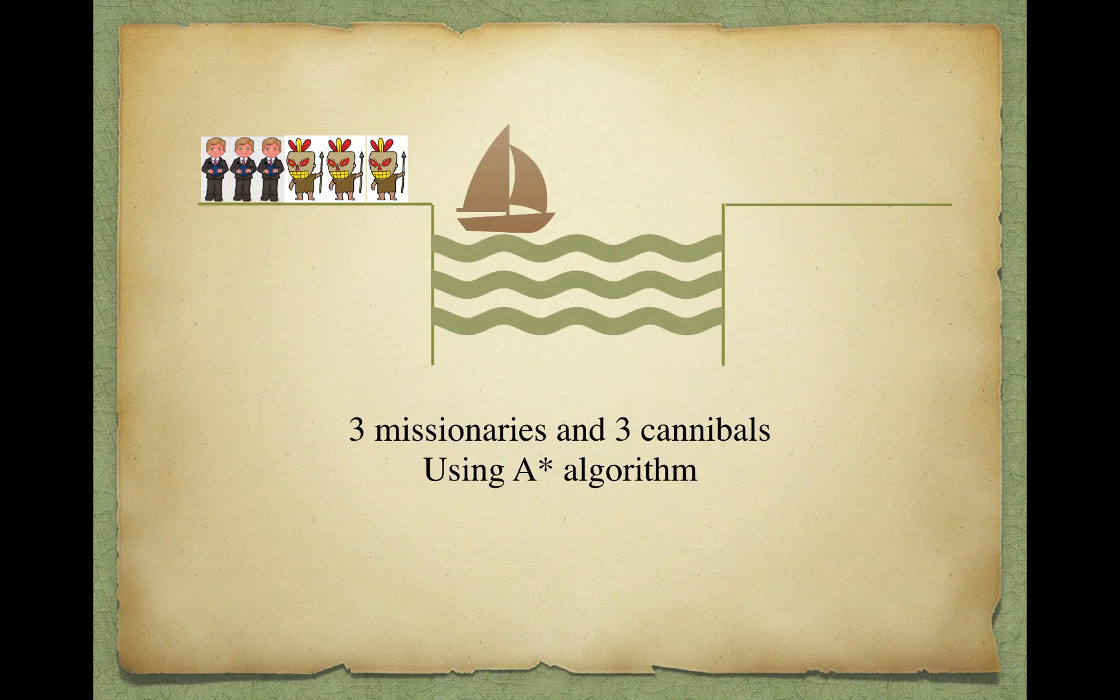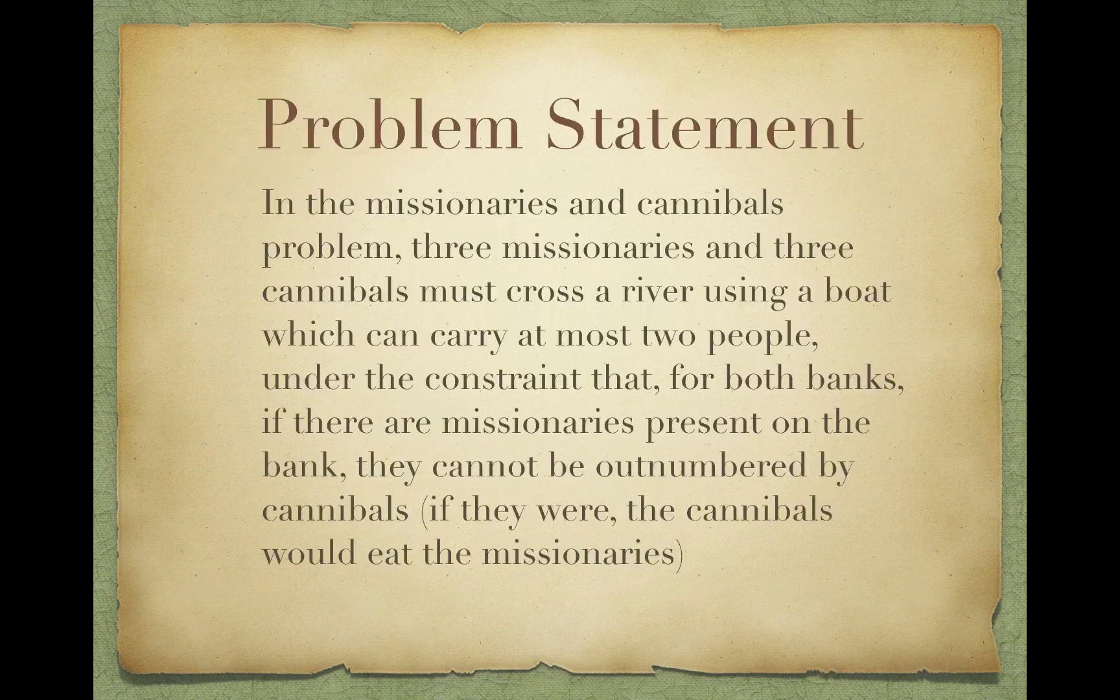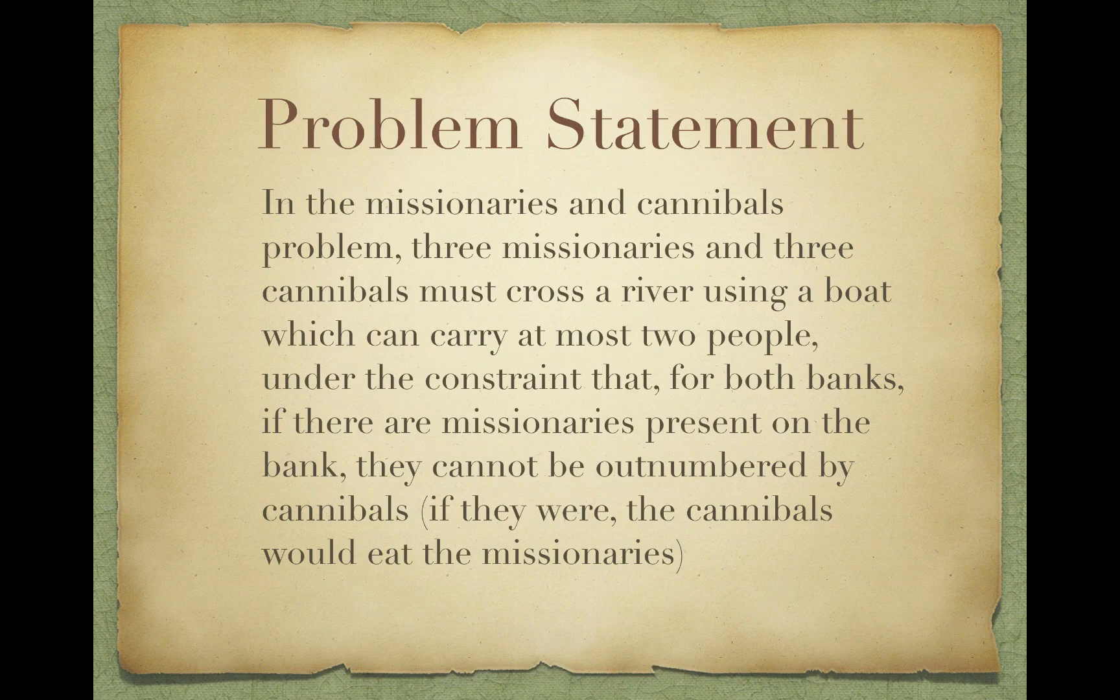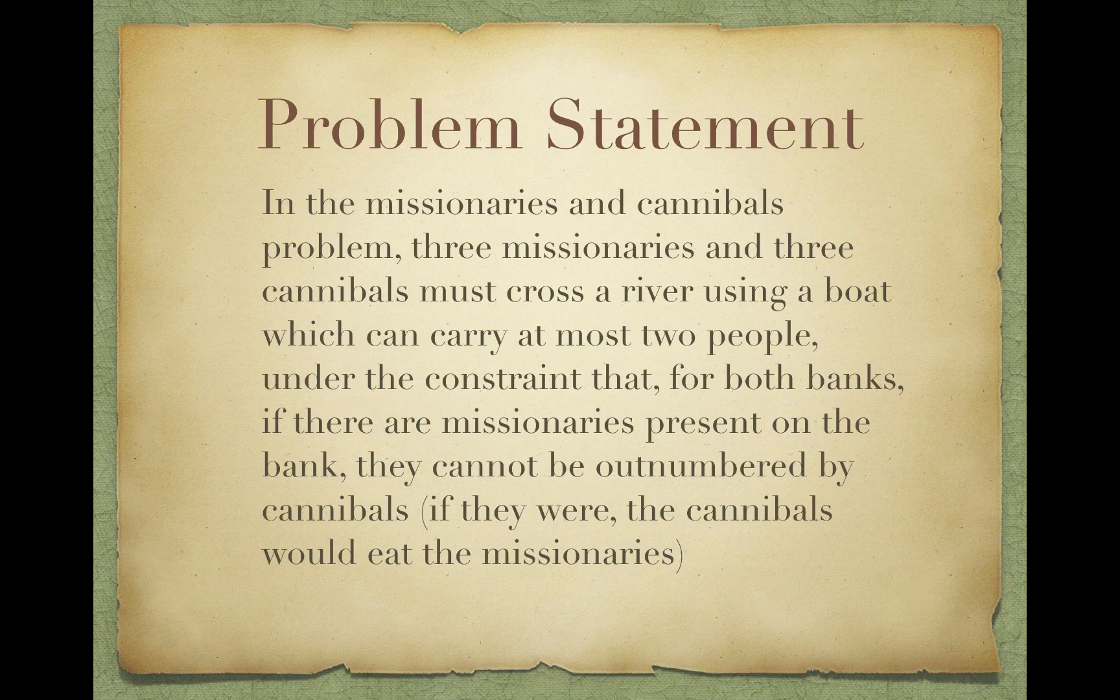First things first, let's check out the problem statement. In the missionaries and cannibals problem, three missionaries and three cannibals must cross a river using a boat which can carry at most two people, under the constraint that for both banks, if there are missionaries present on the bank, they cannot be outnumbered by the cannibals. If they were, the cannibals would eat the missionaries.